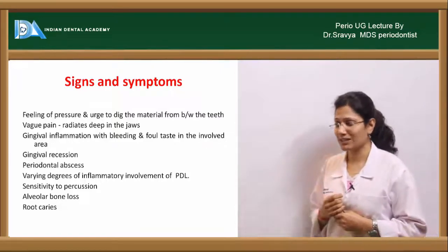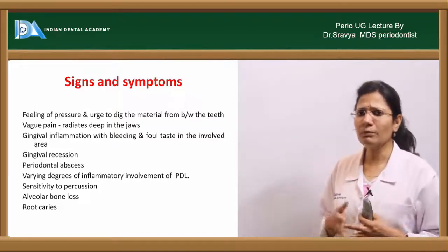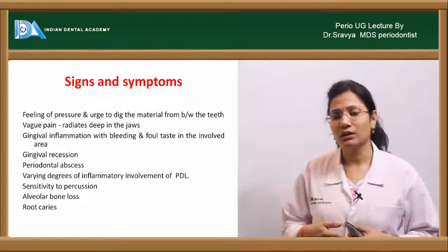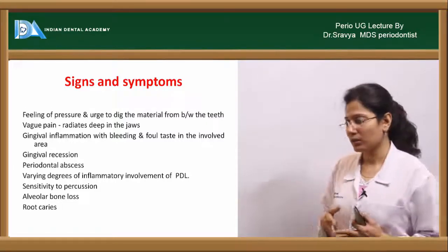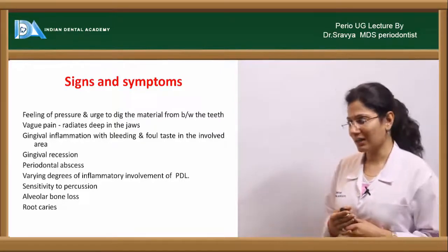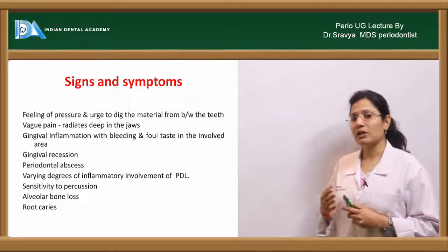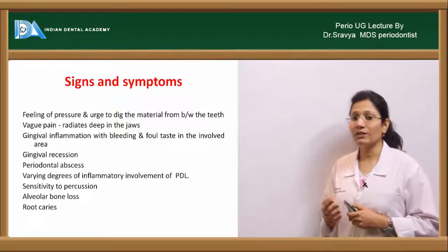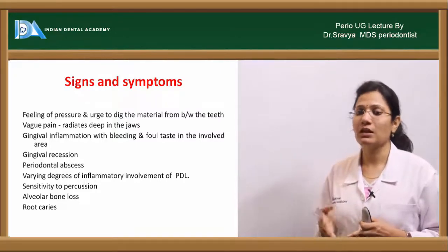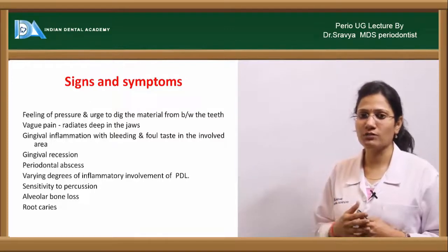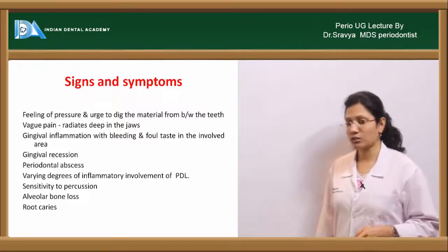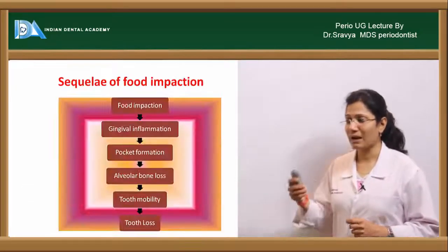There can be gingival recession, periodontal abscess formation due to accumulation of food in the periodontium blocking the periodontal pocket area, and varying degrees of inflammatory responses involving the periodontal ligament. The patient can also complain of sensitivity to percussion. A radiograph will show a typical alveolar bone loss, most often a vertical pattern of bone loss. The patient may also have root caries in the area impacted with food.